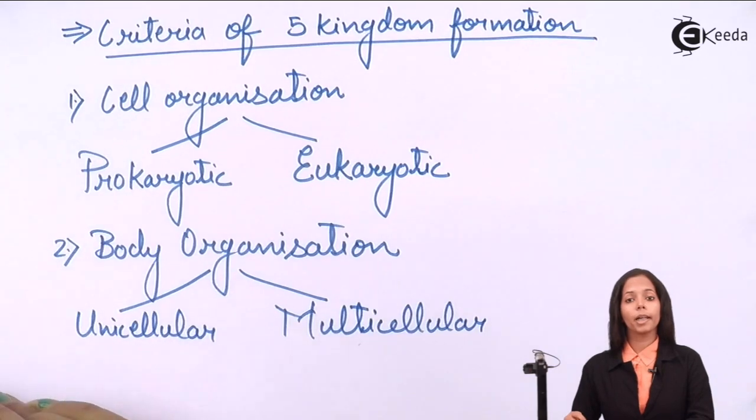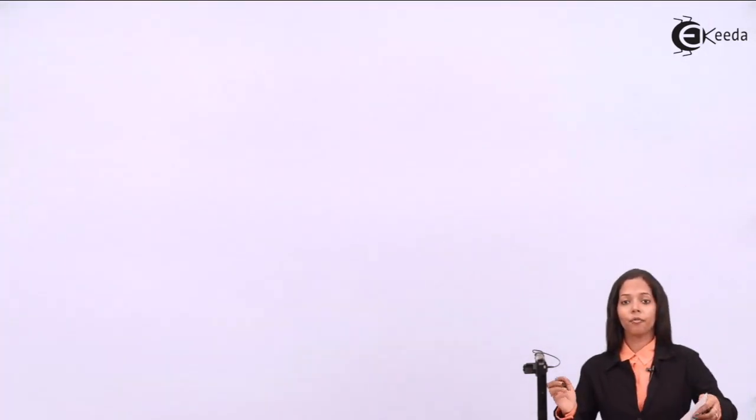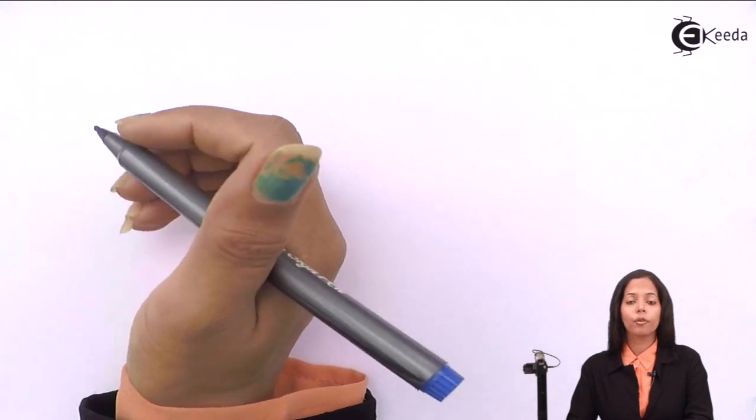The third criteria used by R.H. Whittaker was mode of nutrition. Mode of nutrition means how to obtain food - way of obtaining food. So how does an organism obtain food? They can either prepare food, those are called autotrophs, or they can obtain their food from other organisms and these are called heterotrophs.